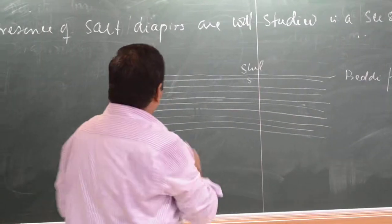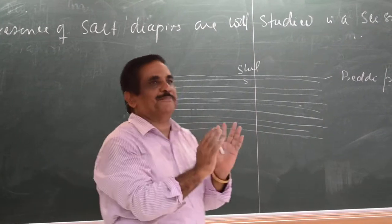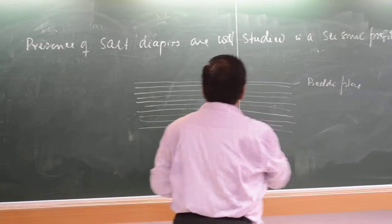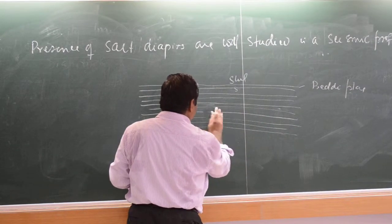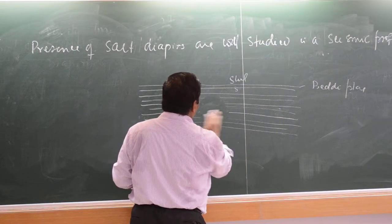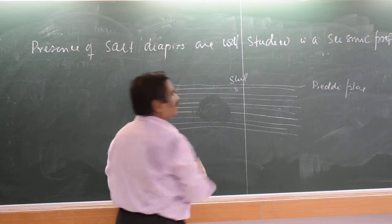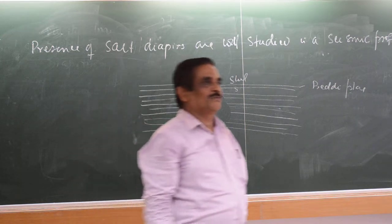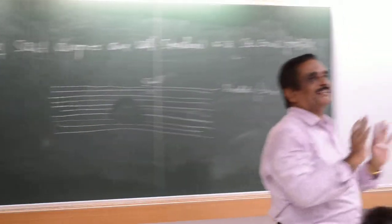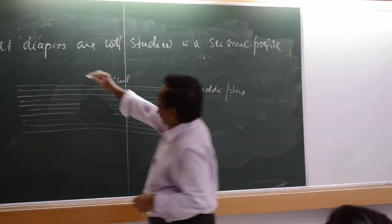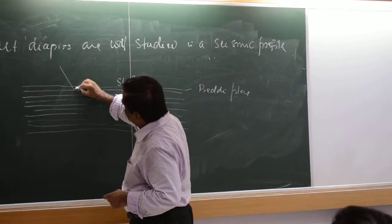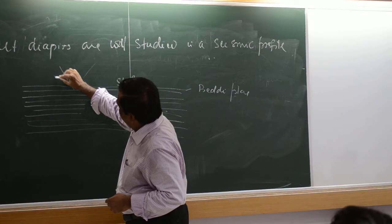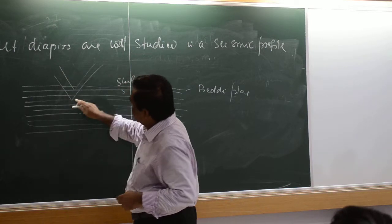Now, you will find if there is a salt diapir inside this, suddenly this reflecting surface will bend. It is transparent. These seismic waves coming from the top are reflecting like this now. That is why you are getting these surfaces.